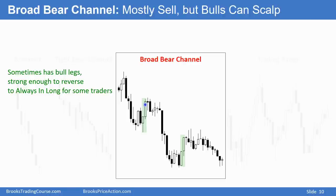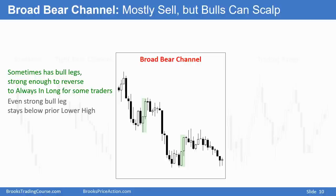However, even when you get a strong bull reversal — a pair of consecutive bull bars — the highs are still lower. So it's still a broad bear channel, even though at times it's pretty bullish. In general, as long as it's in a bear trend of any kind — tight channel, breakout, broad bear channel — the probability is the market's going lower.